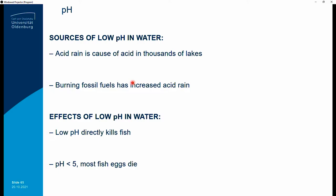Regarding pH — the acidity of water: one of the main sources of low pH is acid rain. Burning fossil fuels has been linked to increased acid rain, which causes acidity in thousands of lakes. The effects of low pH in water include death of aquatic life, though some species prefer acidic waters. Generally, at a pH lower than 5, most fish eggs die — meaning industries that depend on fish eggs for cuisine or as a delicacy are in trouble if you have lower pH.